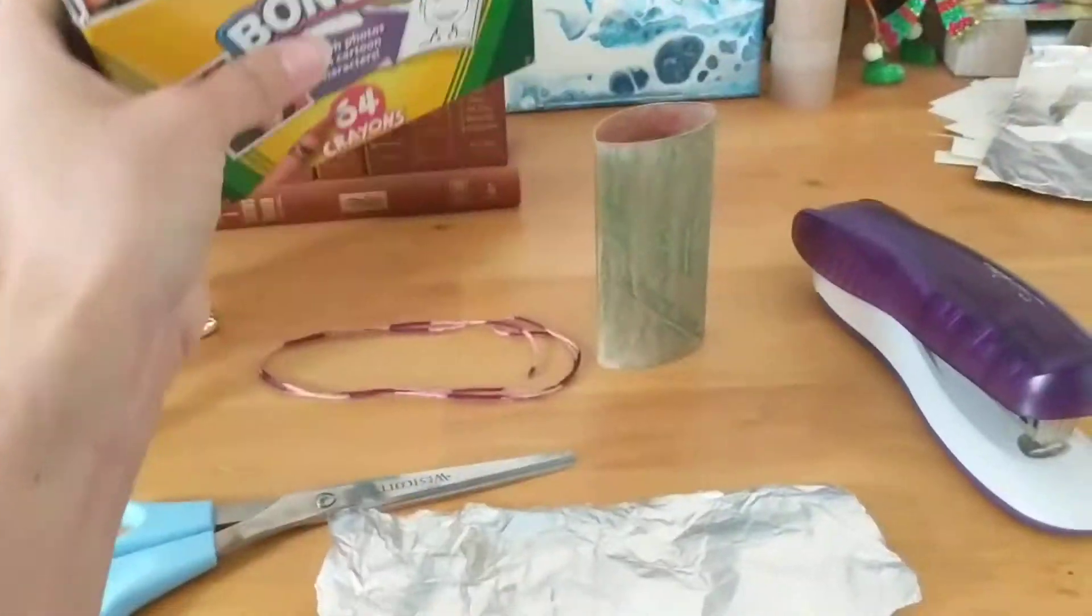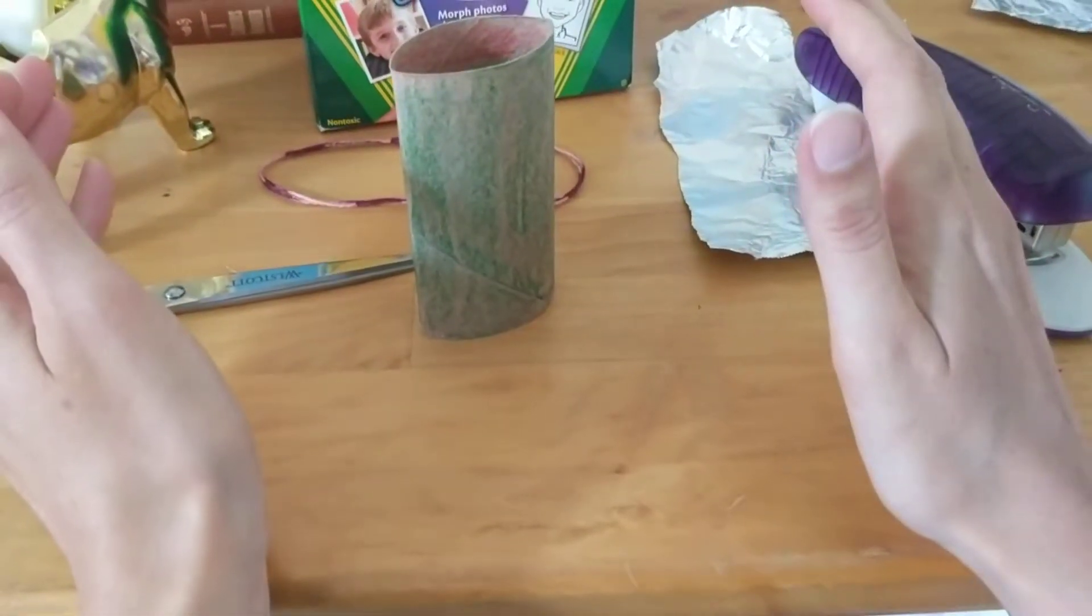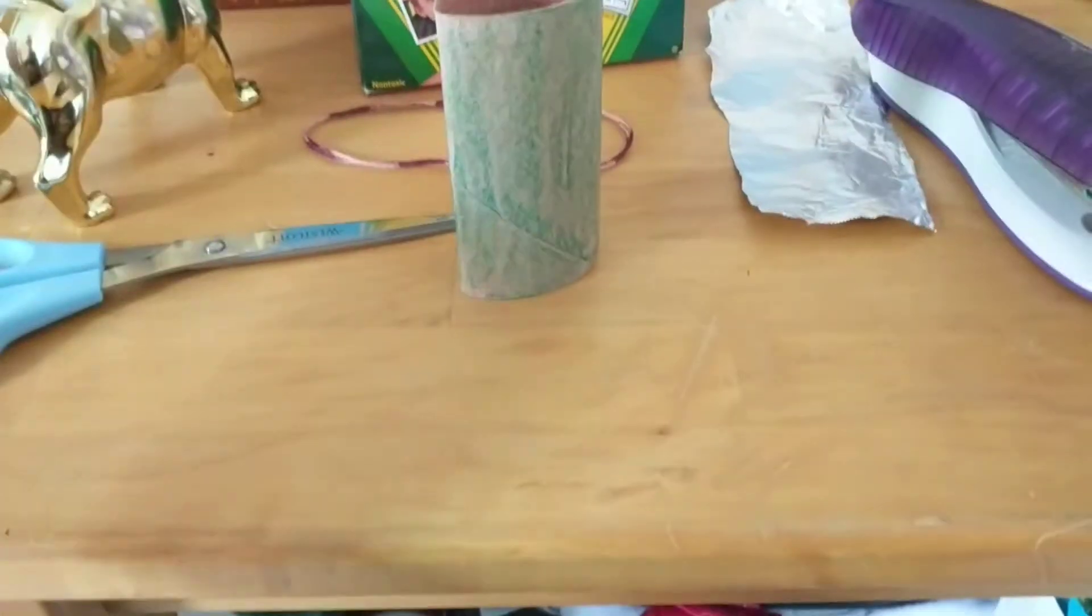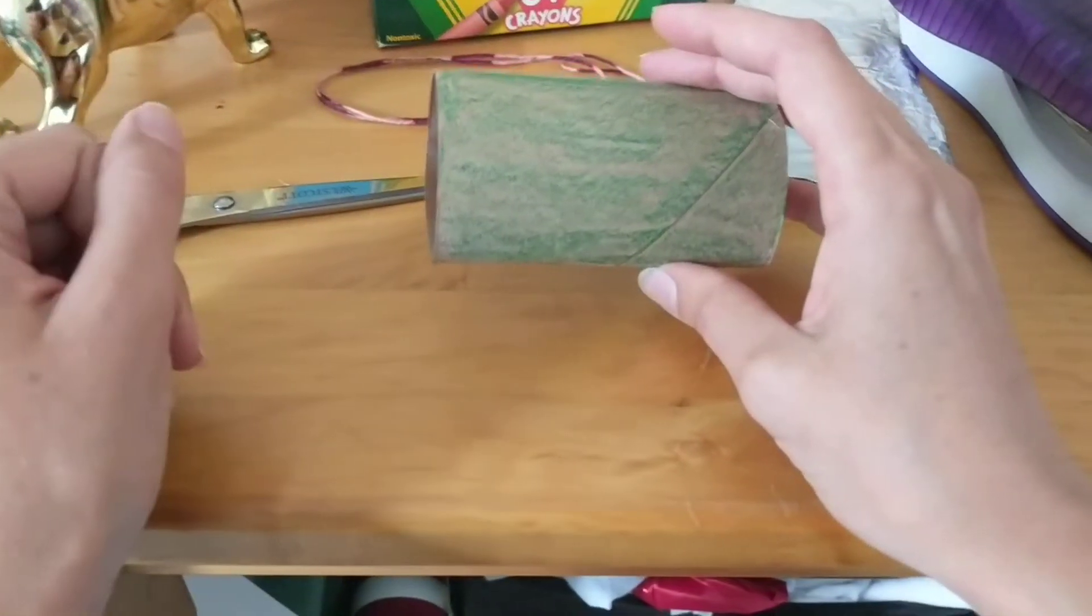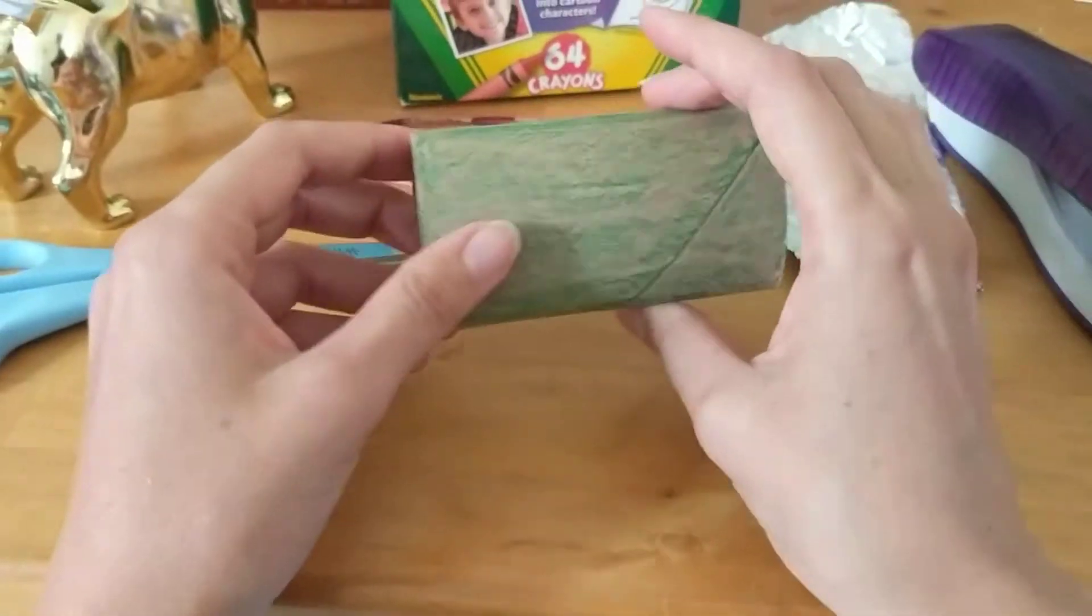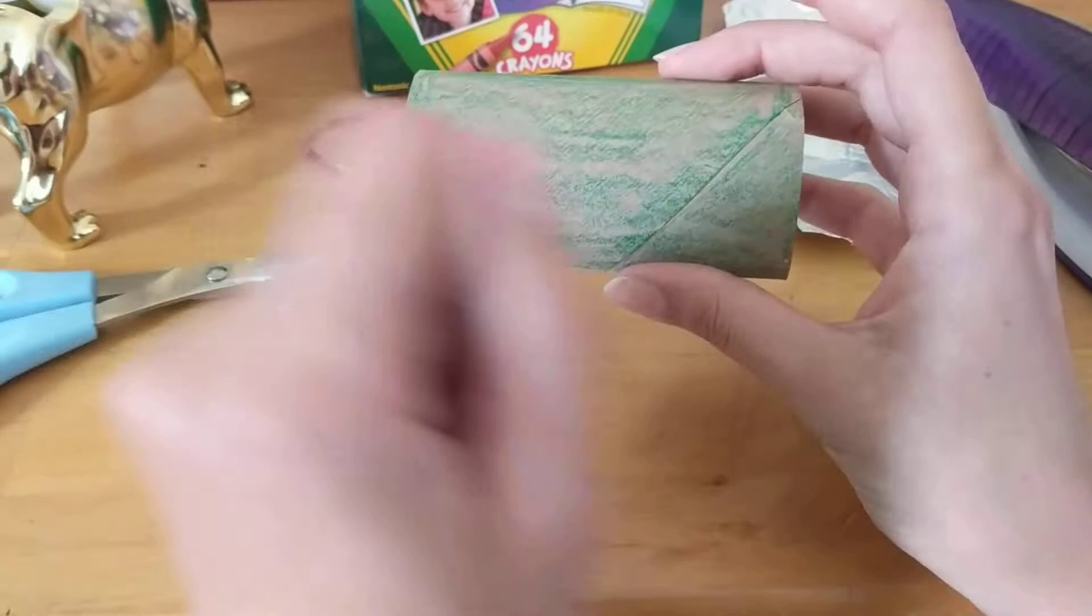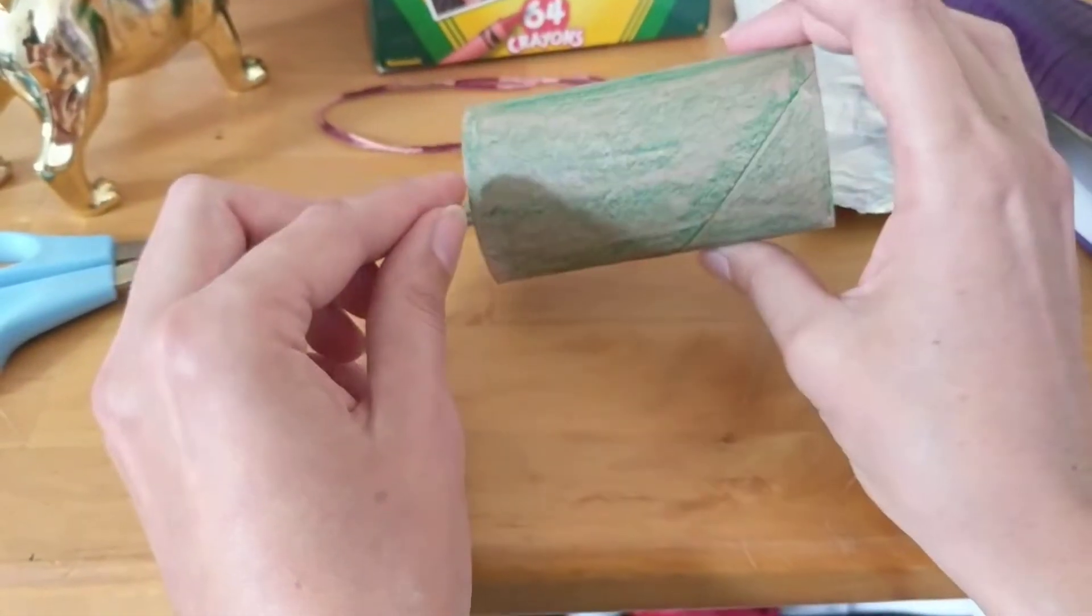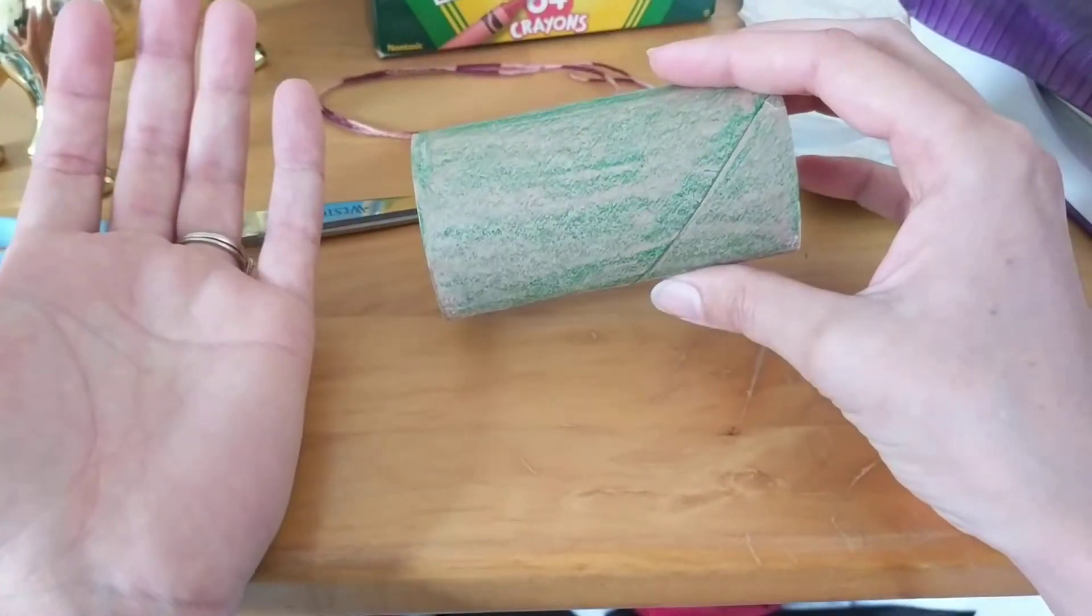So the way that we're going to make this today, first what you're going to do, and as always parents or adults please provide supervision for small children who are attempting this craft because we will be cutting and using a stapler. So we don't want anyone to get hurt. First what you're going to do is you're going to take your paper towel tube or toilet paper roll and you're going to color it whatever color you want it to be. So I'm making a frog so I decided to color it green already and I used crayons but if you have markers, markers would also work.